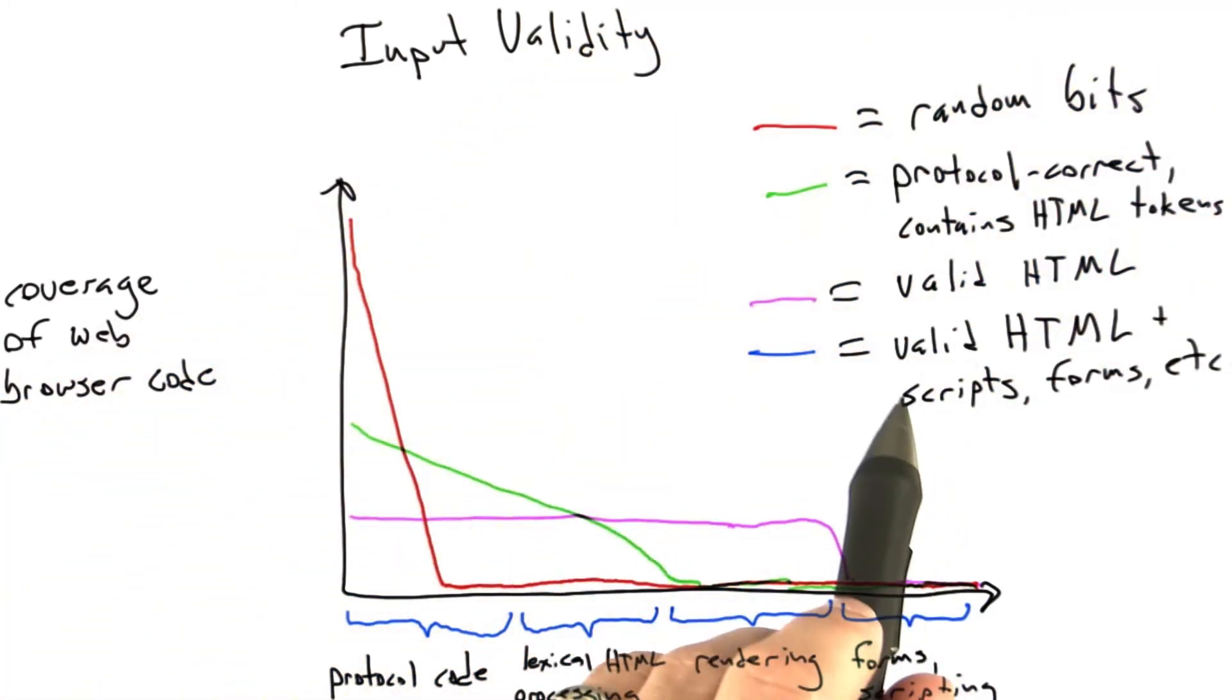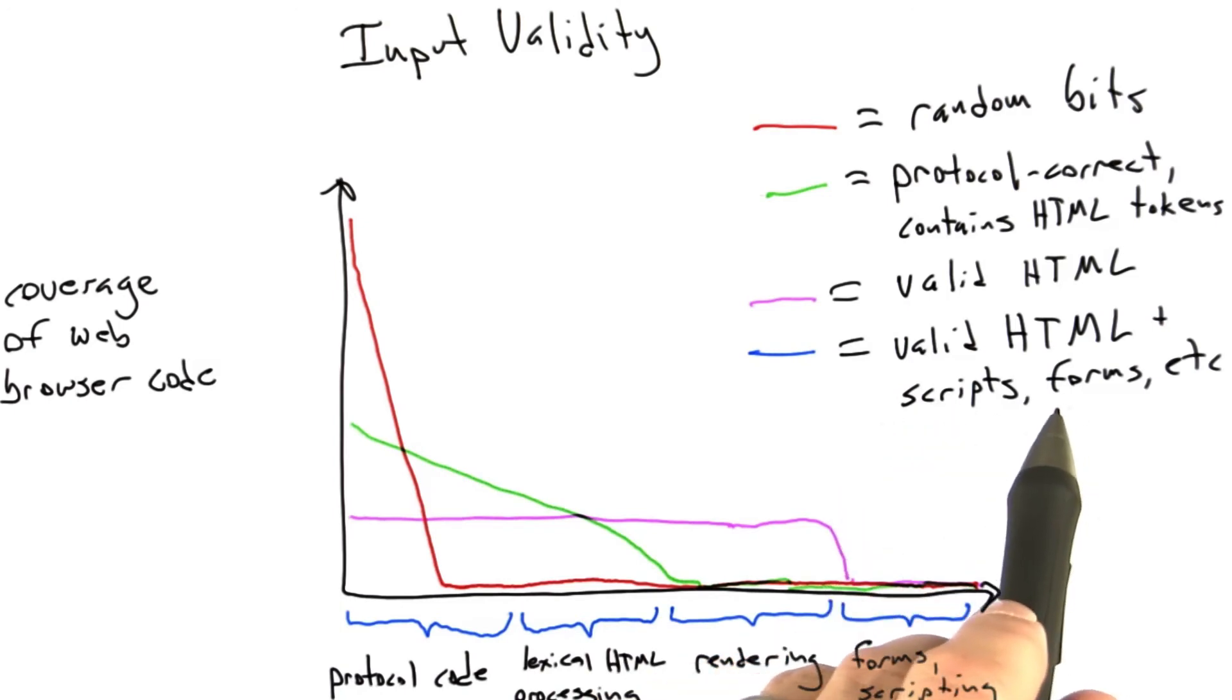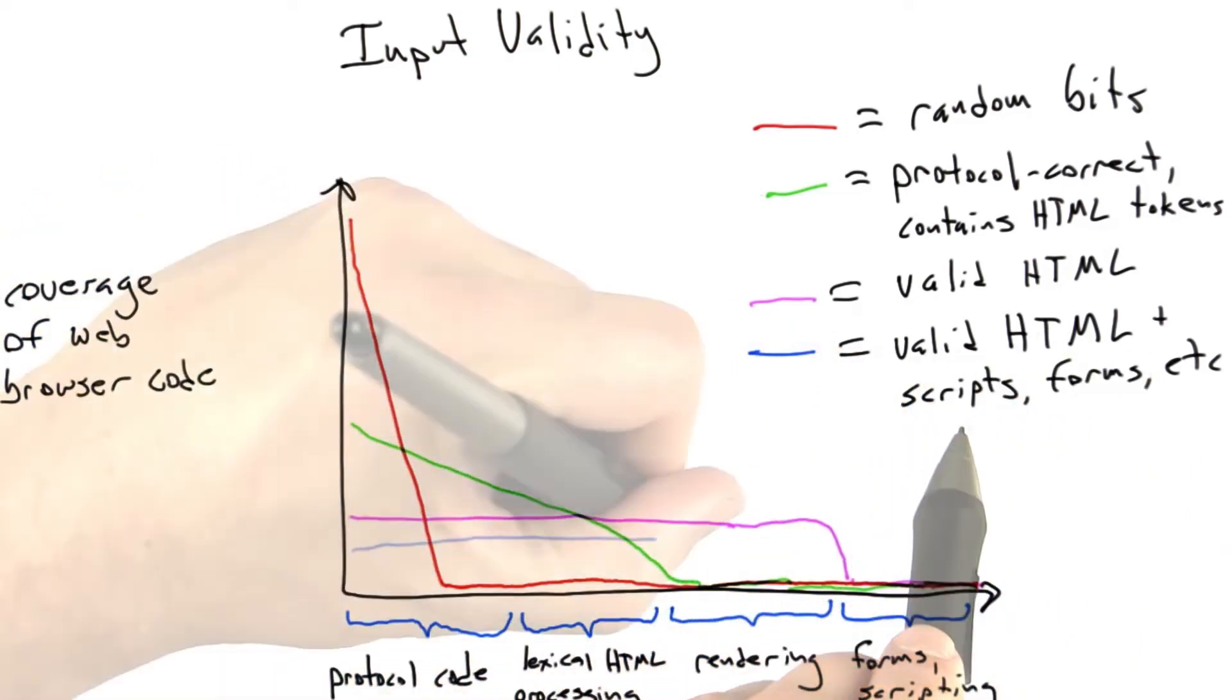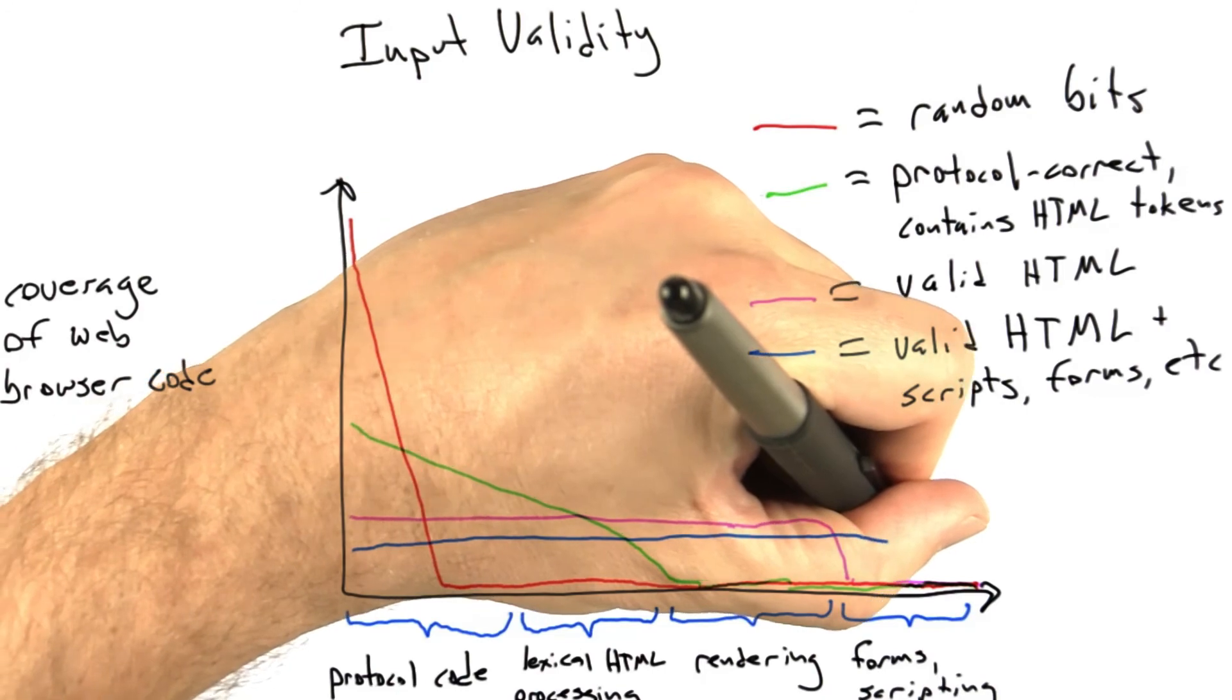And so finally what we could do is generate random code that includes elements of scripting, forms, whatever else it was that we're interested in testing, and we can run that through. And now we can start randomly testing our browser with this.